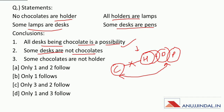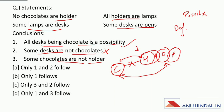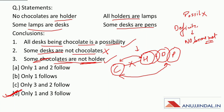Now: some desks are not chocolates. This is a definite statement and we can't say anything definitely about desk and chocolate — so this is incorrect. Now: some chocolates are not holder. In the case of 'no', there is no possibility — possibility koi bhi nahi hogi. And in definite, two answers will be true: one is 'no' itself and the other is 'some not'. This conclusion is of 'some not', so we can say some chocolates are not holder — absolutely correct. Therefore the correct answer will be D — only 1 and 3 follow.